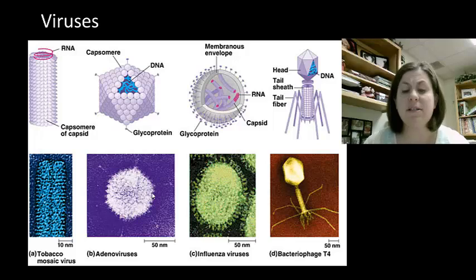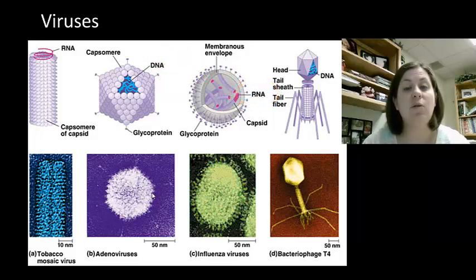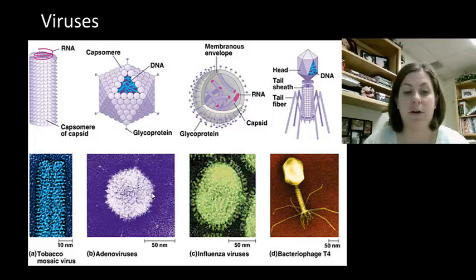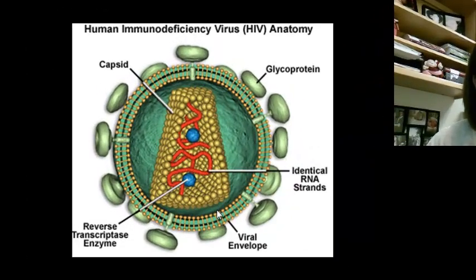Viruses use the envelope to hide from your immune system and to help them gain access into your cells. The inner core of a virus is composed of what we call nucleic acid. A nucleic acid can be either DNA or RNA. It can also be a single-stranded or a double-stranded molecule. RNA viruses are unique because they have to work backwards — they start with the RNA and work backwards to create DNA, which you see here with the HIV virus. These are called retroviruses, and HIV is an example of this.